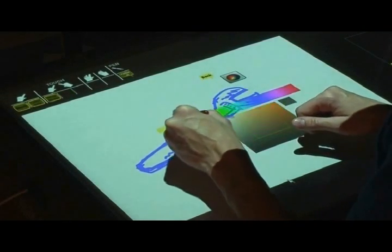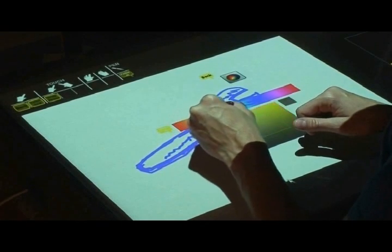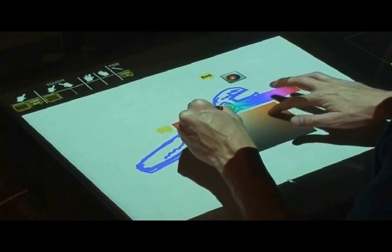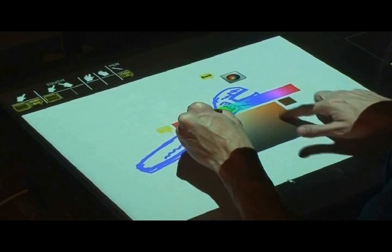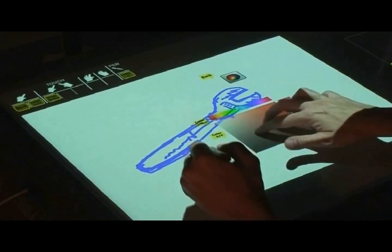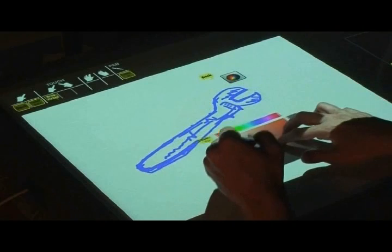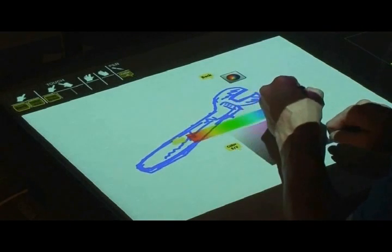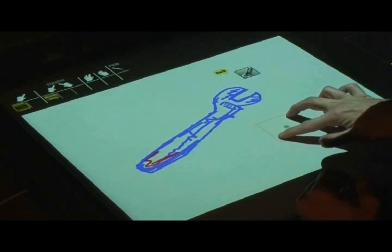The color picker features parallel bimanual interaction for selecting the stroke color. While the pen with its highly precise input is used for defining the hue value, one-finger touch can set the more coarse saturation and value component. Two-finger touch drags the color picker.